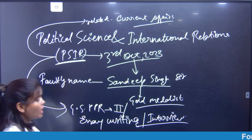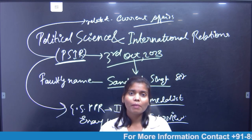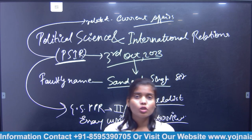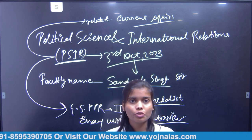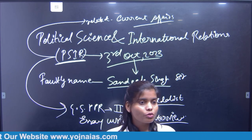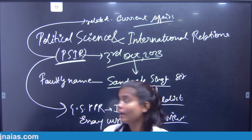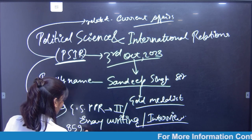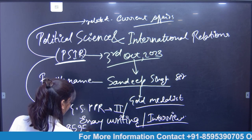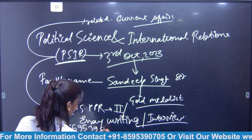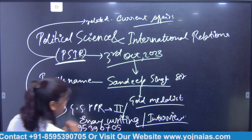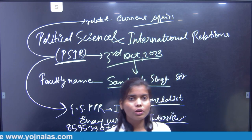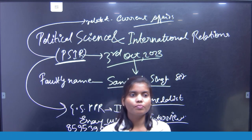Our batch size will be only 35 to 40 students, so we are enrolling students now. You can also join this batch. For more details, you can contact us on 8595390705, or log on to www.yojanais.com.